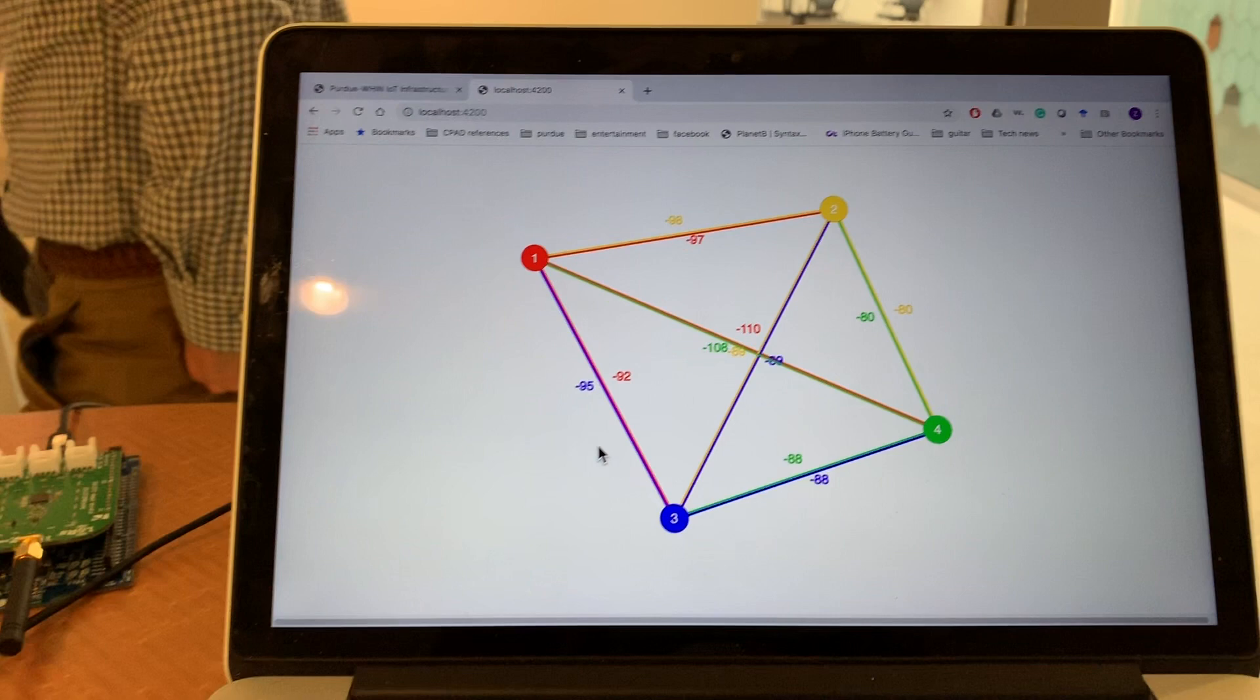The numbers on the lines are the signal strengths in dBm. The larger the number is, the shorter the length will be.